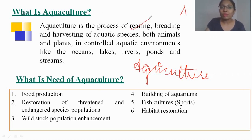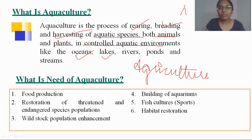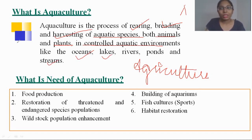Aquaculture is the process of rearing, breeding, and harvesting of the aquatic species of both animals and plants. It involves aquatic environments like oceans, lakes, rivers, ponds, and streams. That entire process is known as aquaculture.